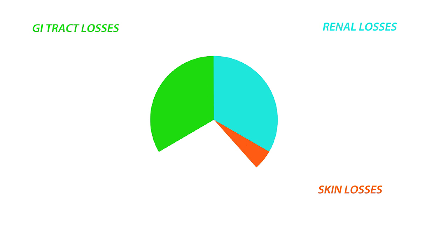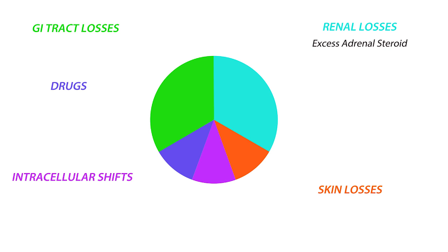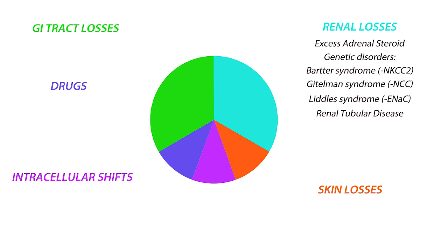While losses through the skin, intracellular shifts, and drugs also occur, they are not as common. Renal losses include excess adrenal steroid secretion, like aldosterone, which increases sodium reabsorption and potassium secretion. Genetic disorders like Bartter and Gitelman syndrome lead to reduced potassium reabsorption, while Liddle's syndrome leads to excess potassium secretion, and renal tubular disease leads to reduced potassium reabsorption.